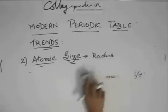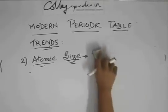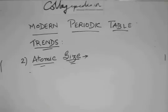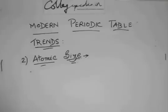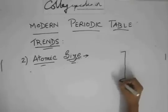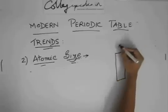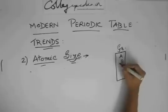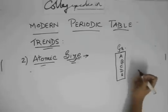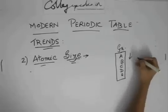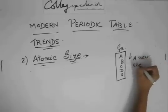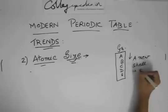How does the atomic size change? Let us examine the groups first. This is a group. Suppose let us name the elements of this group A, B, C, D, E. What happens in a group? Down the group, a new shell is added.